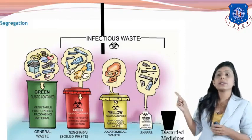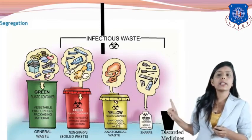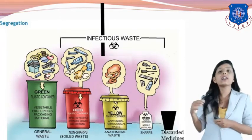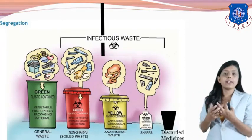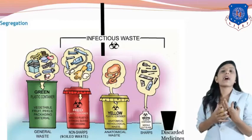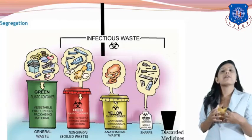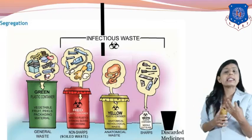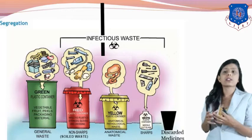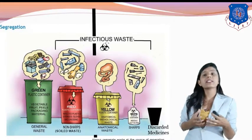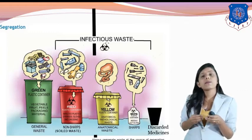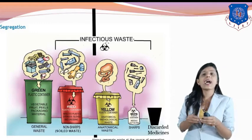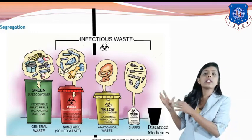There is a green color dustbin, red color dustbin, yellow color dustbin, and white and black color dustbin. If you visit any hospital, you can see different color dustbins placed on every floor. They are placed to segregate the waste so that waste can be treated according to its category. The green color dustbin consists of waste which is not harmful — for example, if someone is eating fruits in the hospital, that waste is thrown in the green color dustbin.